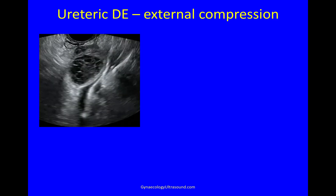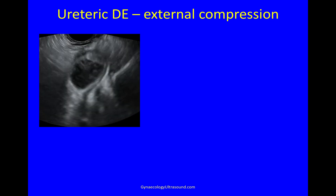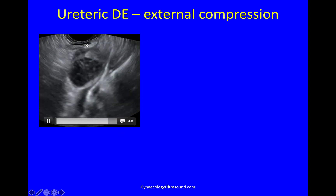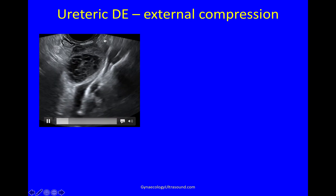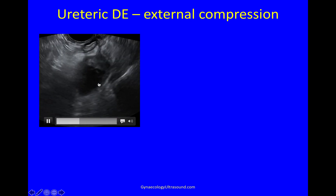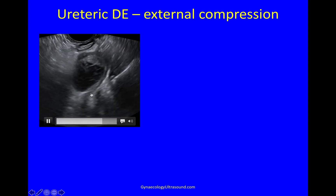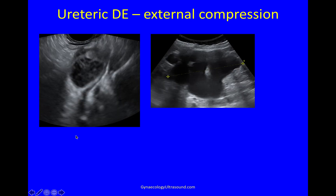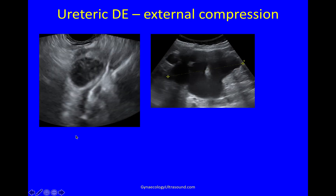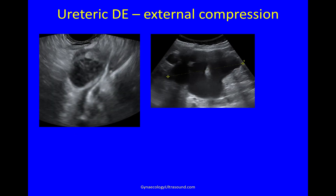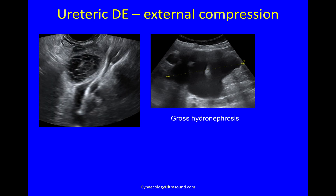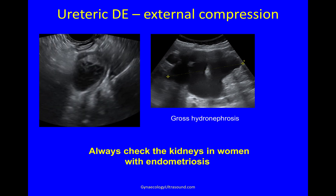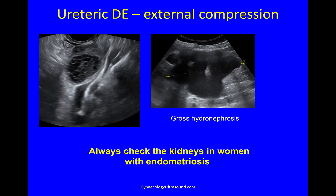There's often fibrosis around the ureter. In this case, there's an ovary with a haemorrhagic cyst, some deep endometriosis in the ligaments, and fibrosis and adhesions to the ureter with a hydrureter above. And in a different patient, you often get a degree of hydronephrosis which will be silent. So you should always check the kidneys in women with endometriosis.